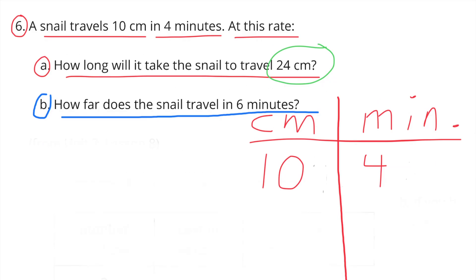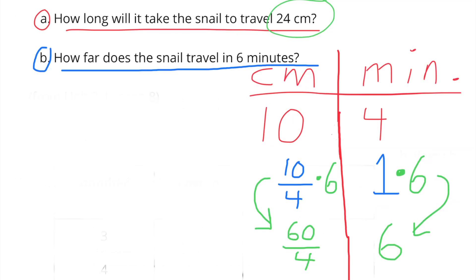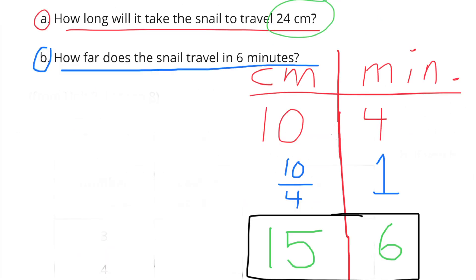B. How far does the snail travel in 6 minutes? Using the table: 10 cm in 4 minutes. Divide 4 minutes by 4 to get 1 minute, and divide 10 by 4 to get 10/4 centimeters per minute. Then multiply 1 × 6 to get 6 minutes, and multiply 10/4 × 6 to get 60/4, which equals 15. So in 6 minutes, the snail would travel 15 centimeters.